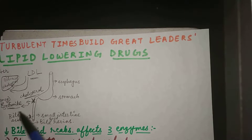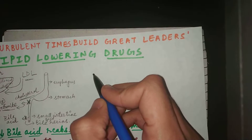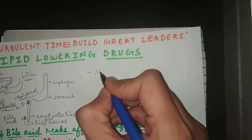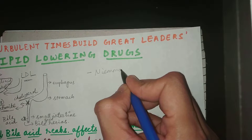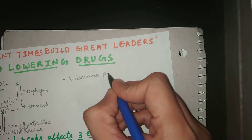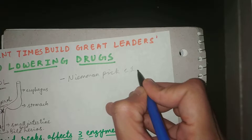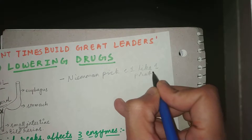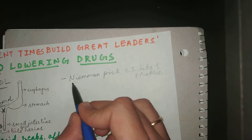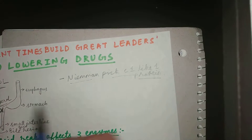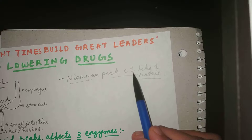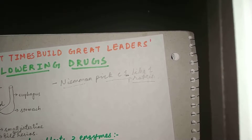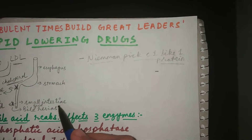Now let's understand which protein ezetimibe blocks. The protein that ezetimibe blocks is called Niemann-Pick C1-like 1 (NPC1L1) protein. This is not extremely high yield, but it's good to know. Now let's understand how bile acid resins work.